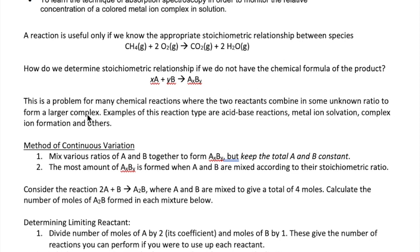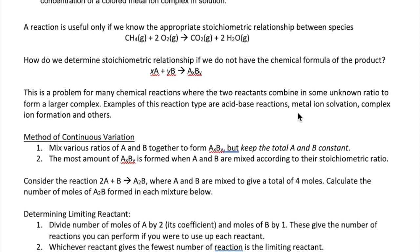However, there are specific reactions where we don't know the actual formula of the product. These are reactions where two species combine into one. Several examples are given here, but the one that we will focus on is the complex ion formation reaction.